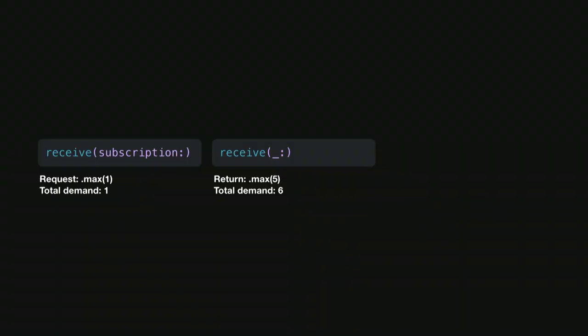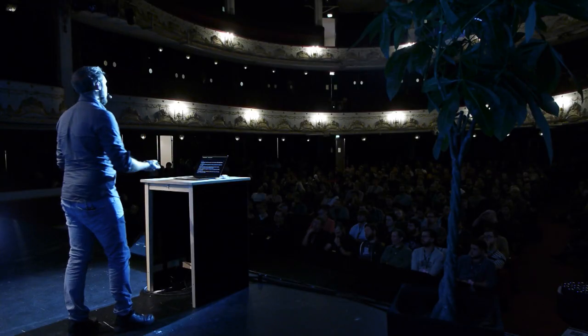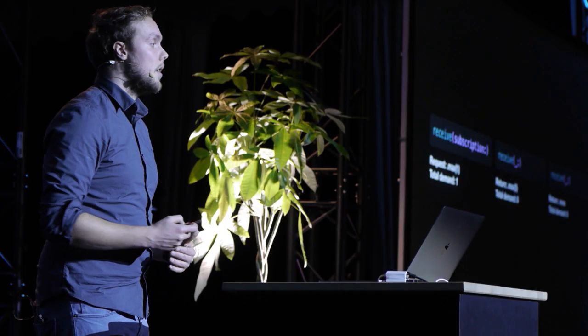When the subscriber receives that single value, it can return a new demand — say five. Because demand is additive, the subscription will now generate a total of six items, meaning after the first item we will receive five more. If in the next step we return none, we're still going to get all six values. So in our example, we request an unlimited amount of values initially, and throughout the whole chain we'll always receive an unlimited amount, no matter what we return from receiveValue — because there's no way to decrease demand, we can only increase it in Combine.